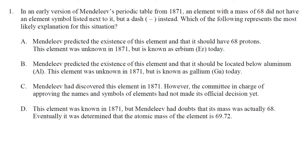These are the answers to the periodic table practice quiz number one. In an early version of Mendeleev's periodic table from 1871, an element with a mass of 68 did not have an element symbol listed next to it but a dash instead. Which of the following represents the most likely explanation for this situation?